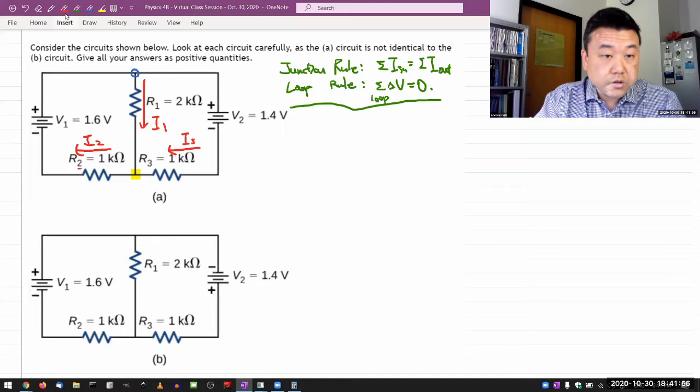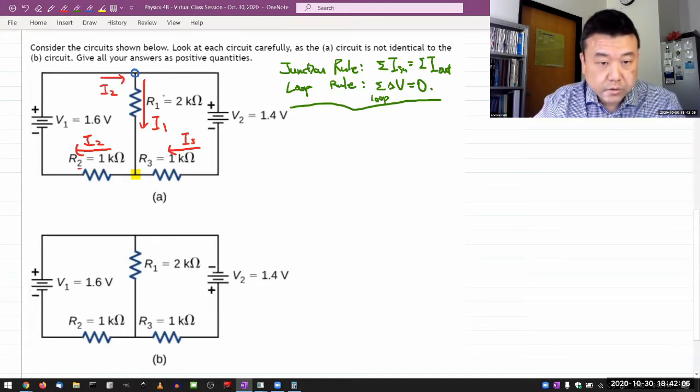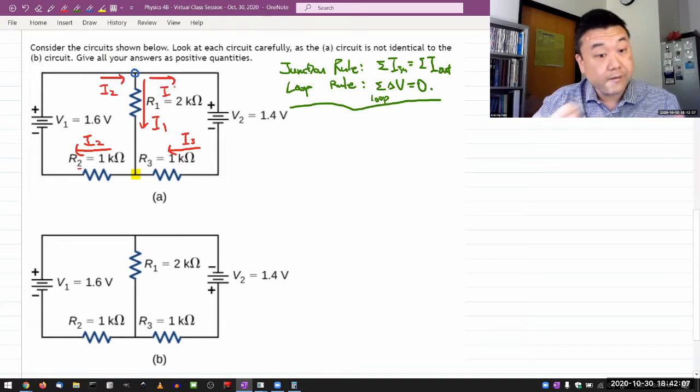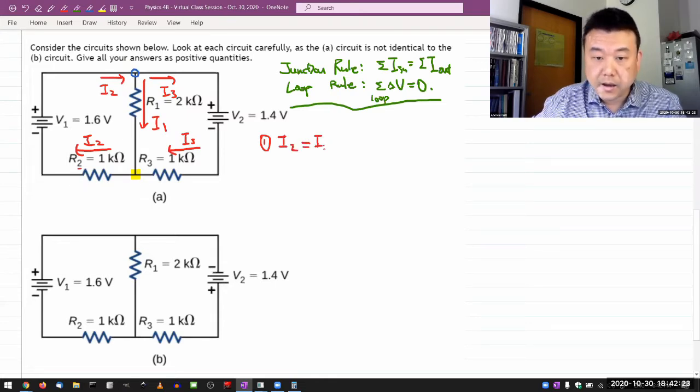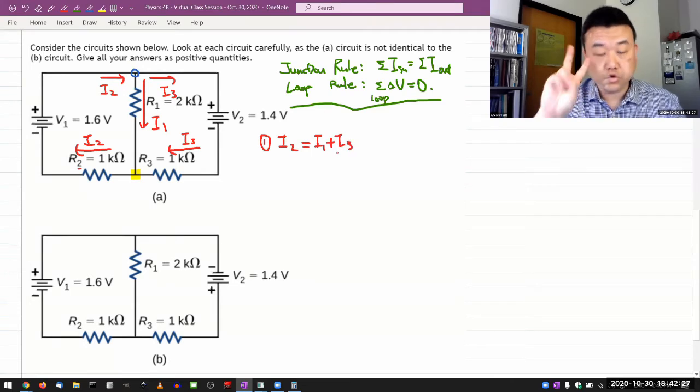Looking at that one junction, it looks like I have two coming in, and I have I3 going out. Okay, so that's the way I labeled it, you might have labeled it differently, fine. But that's the way I labeled it. So my equation one is going to be I2 current in is equal to current out I1 plus I3. So I need two more equations, and those are going to come from the loop rule.